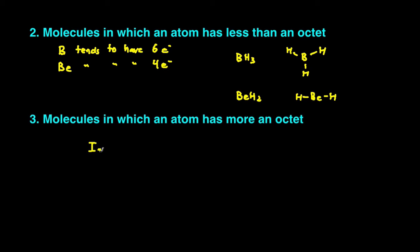So an example of that would be I3 minus. When you draw out this structure, it looks like this with the iodine on the end having six lone electrons around it. And then the iodine in the middle having three lone pairs.